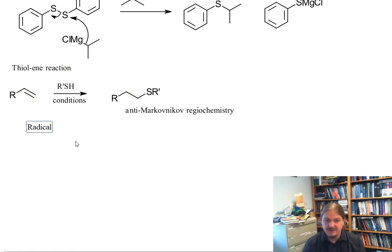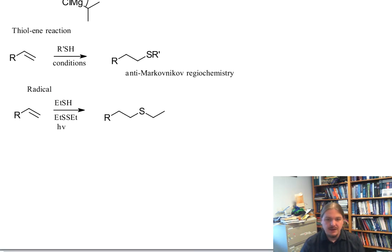One uses a radical mechanism and some kind of radical initiator. So let's do a slightly more specific example. I'm going to leave R here, but I'm going to choose a specific thiol. And as a radical initiator, the ethyl disulfide, and of course something that can set up the initial homolytic cleavage.